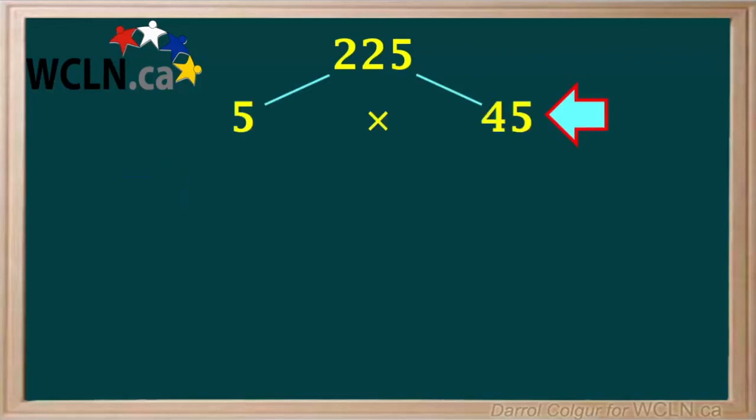So we can say that 225 is 5 times 45, and write it here. 5 is a prime number, and we can't divide it any further.